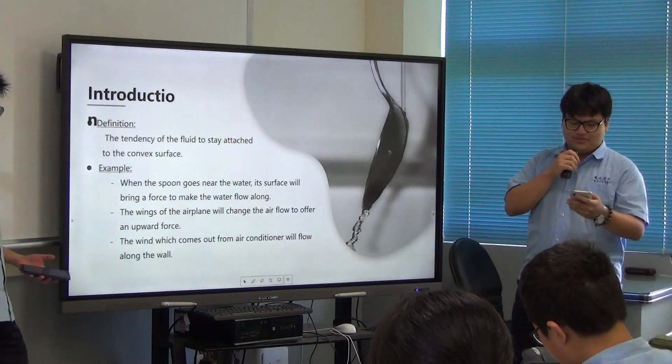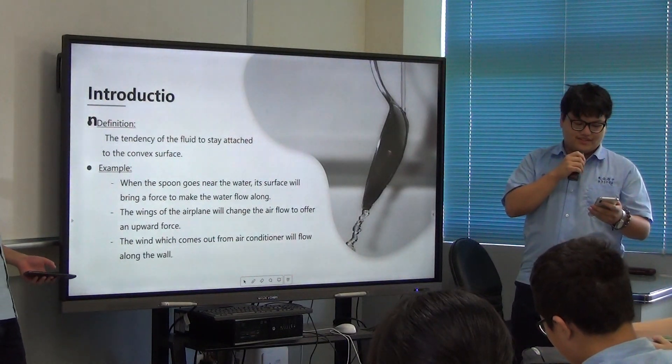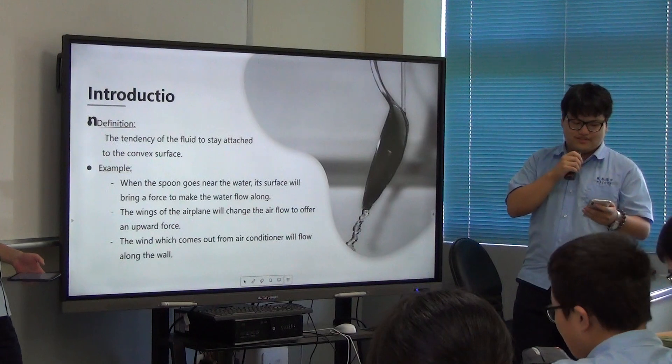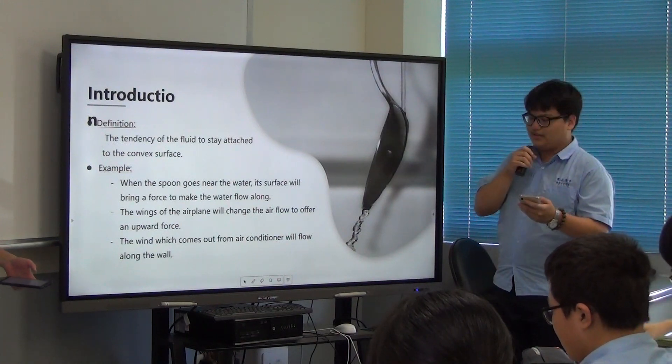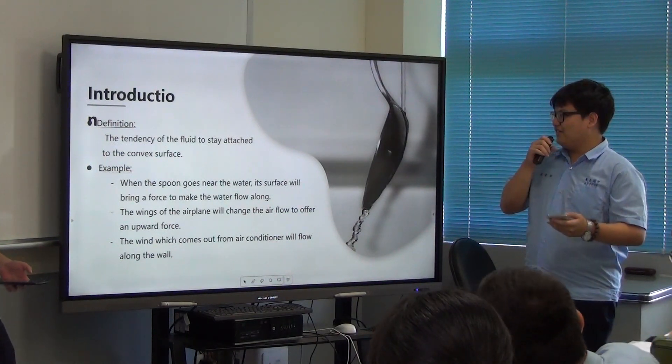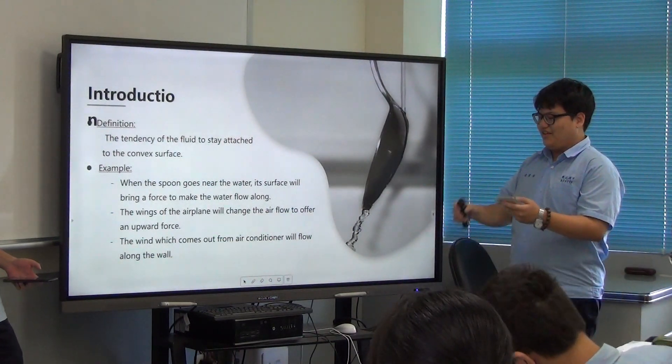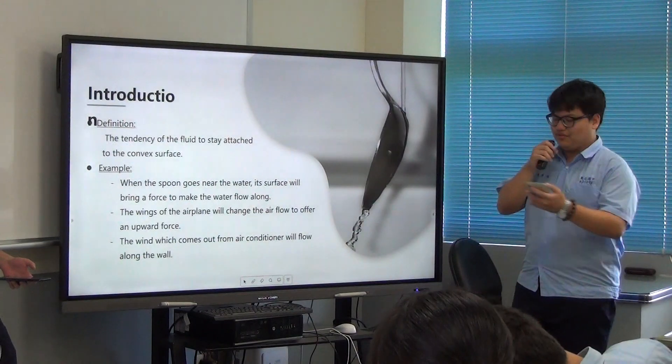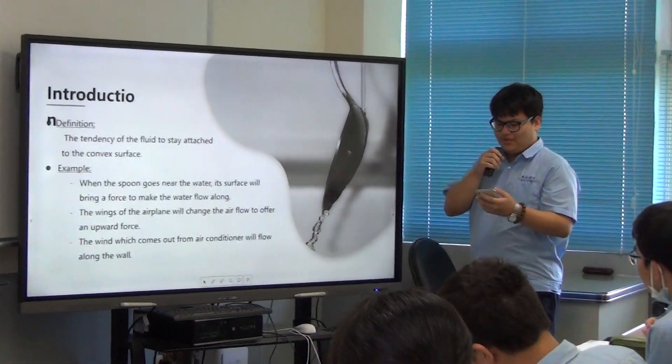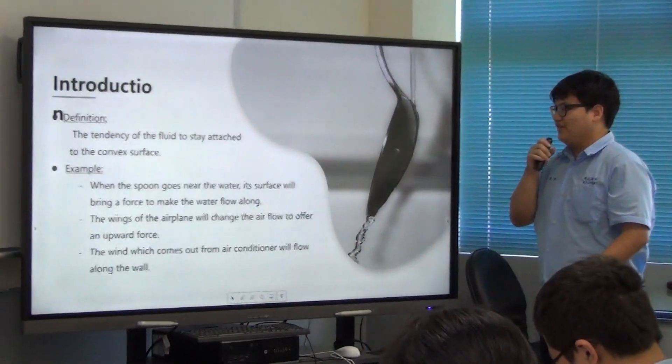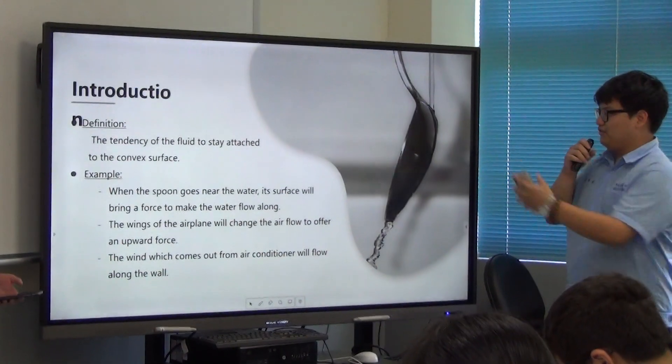In short, Coanda Effects is the tendency of the fluid to stay attached to the convex surface. When the water flows down and the convex surface is close to the water flow, water will tend to flow along the surface rather than go straight.